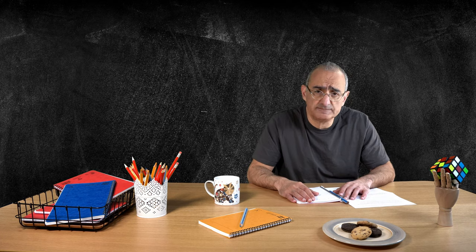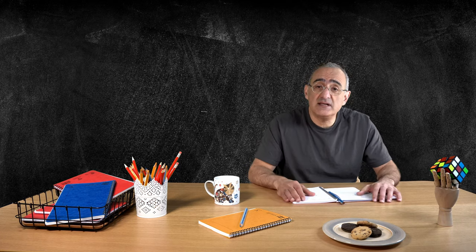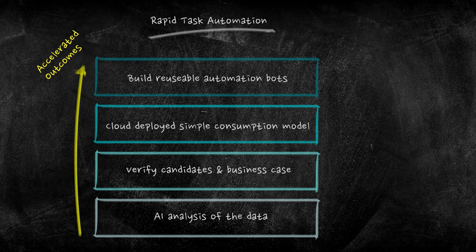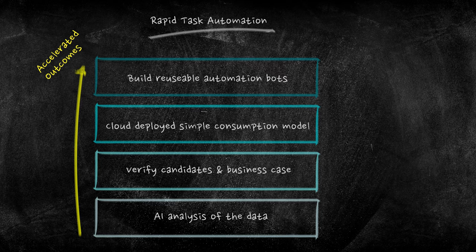And this is where our unique rapid task automation solution comes into play. Delivered as a service, rapid task automation uses our unique AI technology to analyze the underlying data and identify the best candidates for automation.